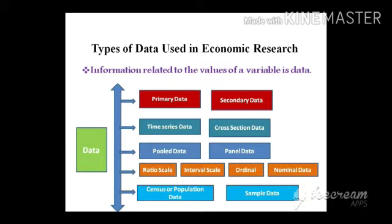Interval scale data uses some kind of interval — for example, 1 to 5, 1 to 7, or 1 to 10 — to capture the expression of a respondent. We generally use interval scale data in Likert scales. In ordinal data, we cannot get a numerical value but we can rank preferences — for example, grades A, B, C in an exam, or economic conditions classified as very low, low, medium, or good.